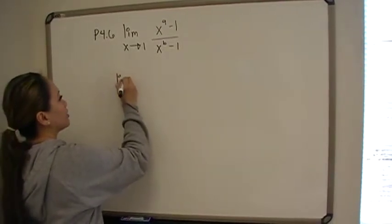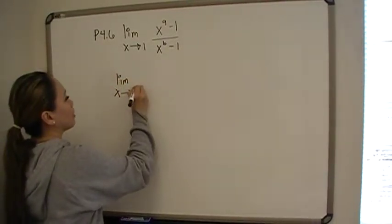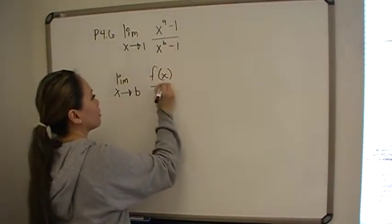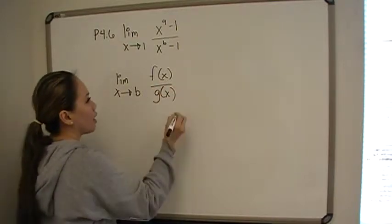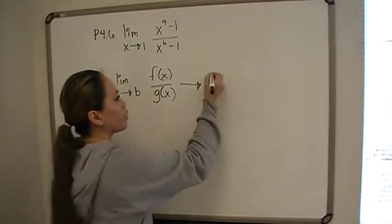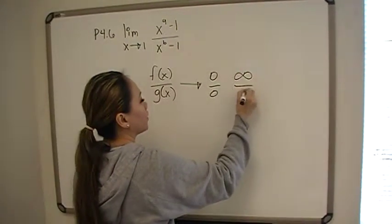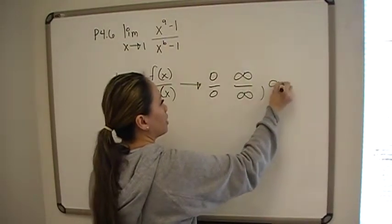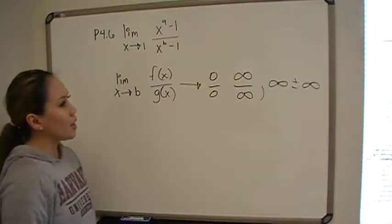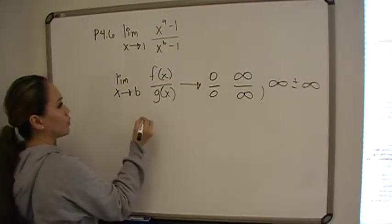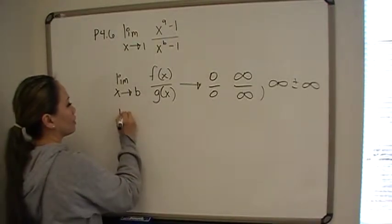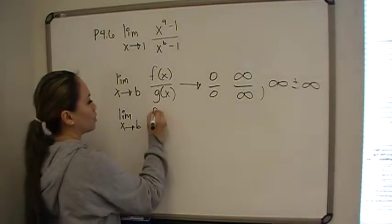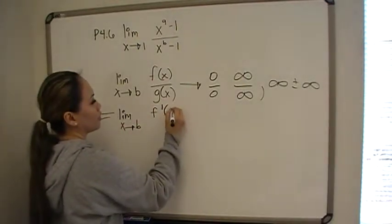L'Hopital's rule: the limit of f(x) over g(x) that results in some kind of indeterminate form like 0 over 0, or infinity over infinity, or infinity plus minus infinity. We can use L'Hopital's rule and say that the limit of such a function will equal the limit of the derivative of the function.